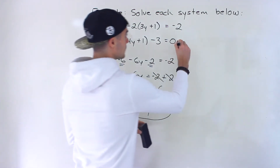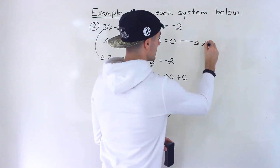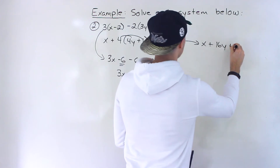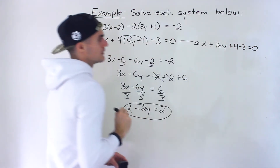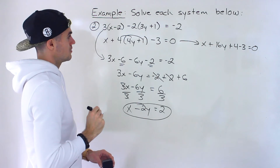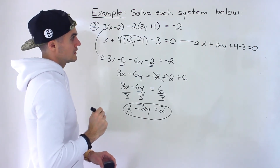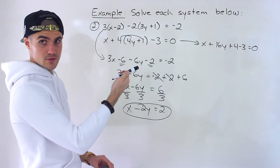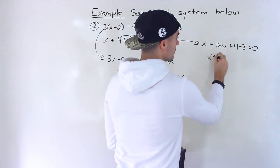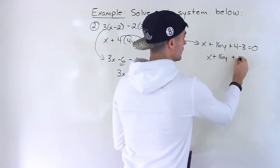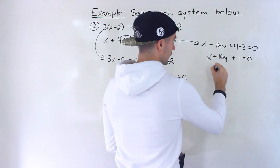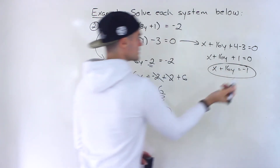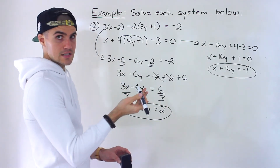For the second equation, x is already separate, but we distribute the 4: x plus 16y plus 4 minus 3 equals 0. The 4 minus 3 simplifies to plus 1. Bringing the 1 over gives x plus 16y equals negative 1. So now we can work with these two simplified equations: x minus 2y equals 2, and x plus 16y equals negative 1.